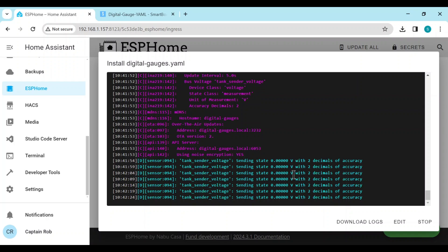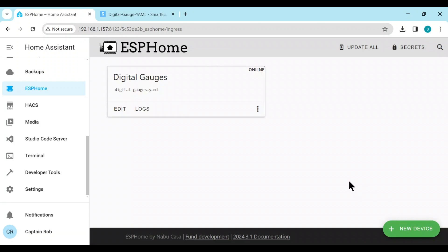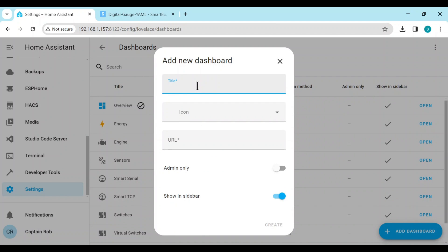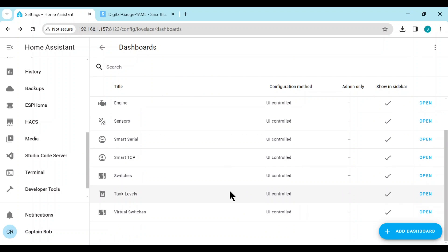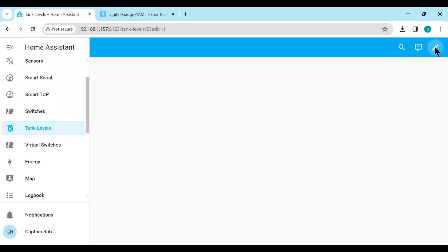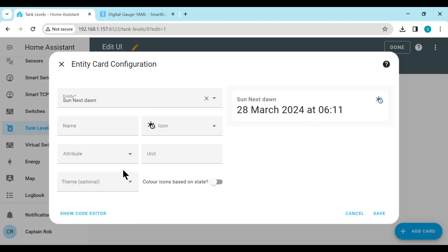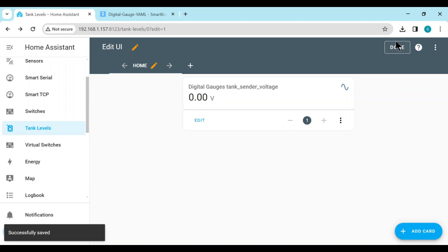But before I do that, let's just go and create a dashboard to put this voltage on. We'll create a dashboard. Empty dashboard. Let's just call it tank levels. Give it an icon. Fuel. Create. Open the dashboard. Edit it. Let's add a card. The entity. Done. So here we can see the zero volts.